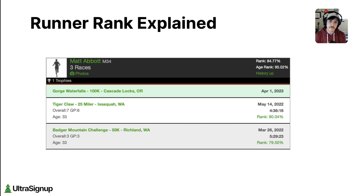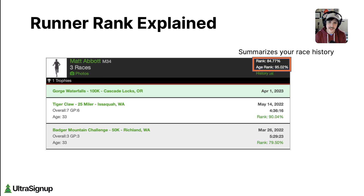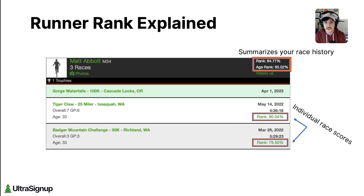In the top right corner of the profile banner, note the two scores which range from 0 to 100%: rank and age rank. These are separate aggregate scores that summarize your racing history. For each race you finish — DNFs and DNSs do not count against you — you receive both a rank and an age rank score. Though I should note, age rank exists under the hood here but isn't displayed directly on your results page.